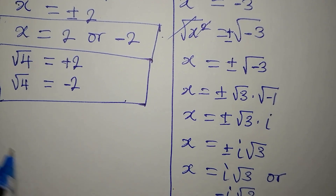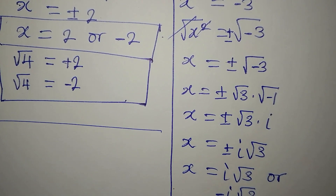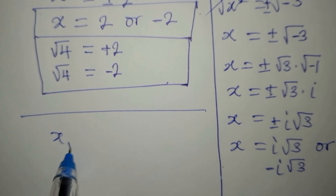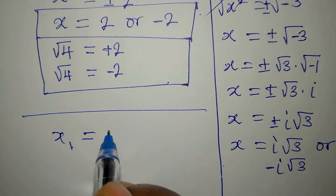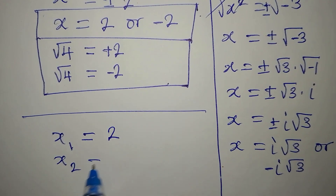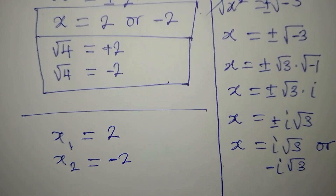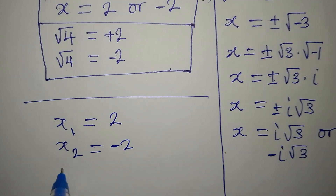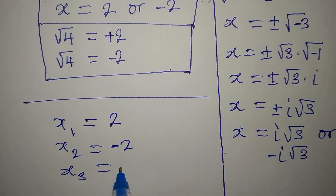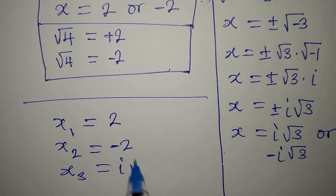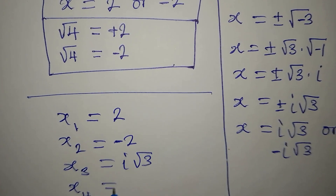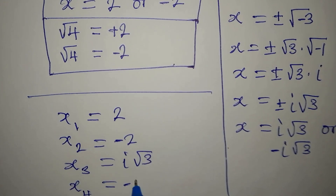Let us now list the four solutions. The first solution x₁ equals 2. The second solution x₂ equals negative 2. The third solution x₃ equals i root 3. And the fourth solution x₄ equals negative i root 3.